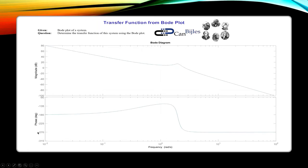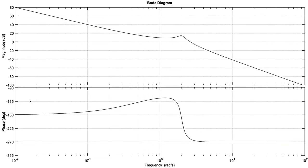Let's zoom into this Bode diagram and look at it step by step. When I zoom in, I get the full picture of the Bode diagram. The gain is very close to 80 dB at 10 to the power minus 2 radians per second, but it is not a constant value. If I reduce the frequency to, say, 10 to the power minus 3, it will not stay at 80 dB, so I cannot say there is a DC gain. Increasing the frequency one decade — from 10⁻² to 10⁻¹ — the gain decreases from 80 dB to 40 dB.